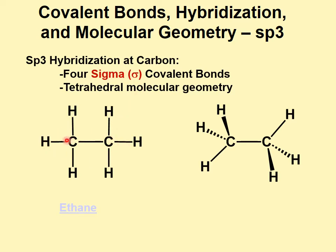we see we have four sigma covalent bonds. The electrons in the sigma covalent bond are somewhere directly in between these two carbon atoms. Between any two atoms, there is always one and only one sigma covalent bond. Any additional bonds you see will be pi covalent bonds.